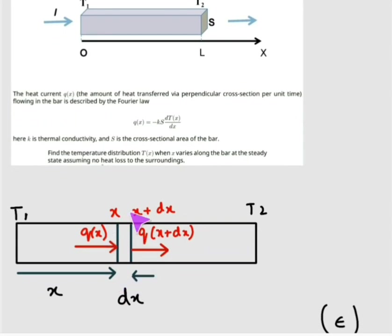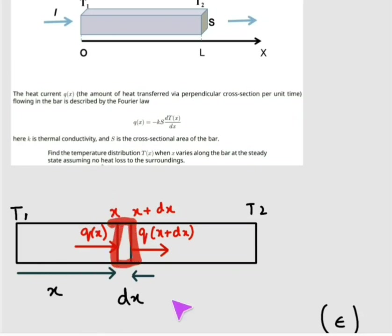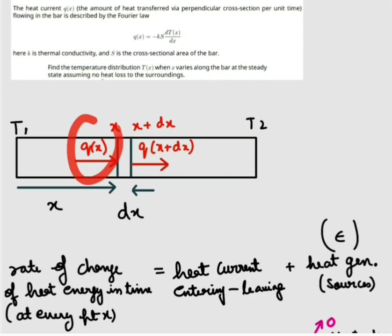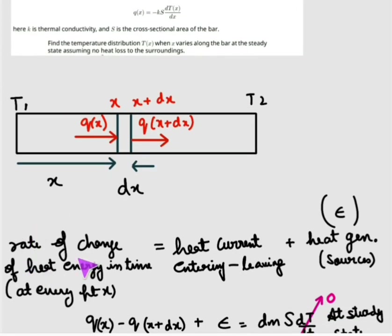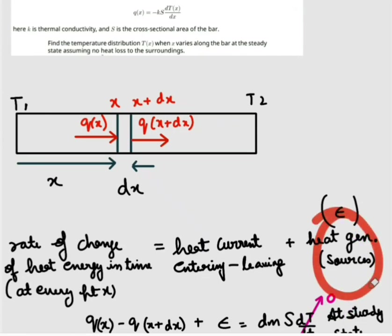Consider a small differential element of length dx at a distance x. There is a heat current entering this differential element and a heat current leaving it. These two values will not be equal. The rate of change of heat energy at every point x equals the heat current entering minus the heat current leaving, plus any heat generation sources. In this case, the heat source is the electric current.